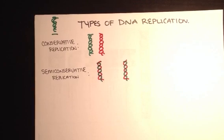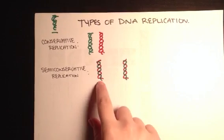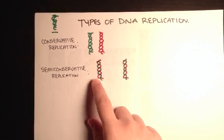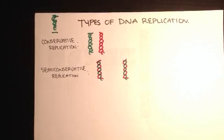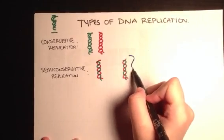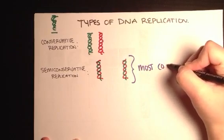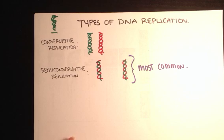So as you can see, you're going to have one strand being an old strand, which is a parental strand, and the other strand, which is in red, is going to be your newly synthesized strand. And it's important to consider that this type is the most common type of replication that you will see.